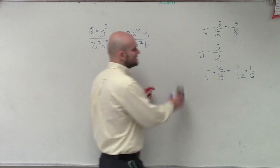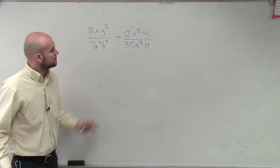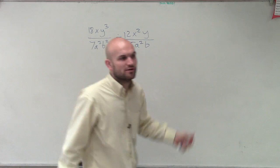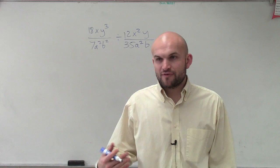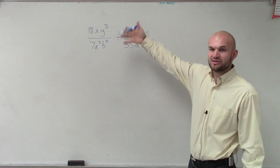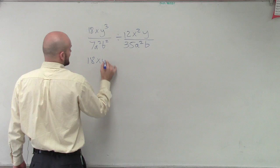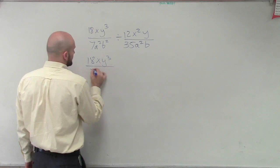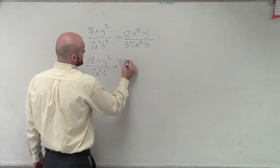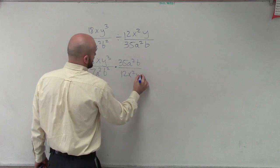So in this case, you guys can see I have a pretty odd fraction, right? It's not as easy as 1 fourth and 3 eighths. We have a fraction that's looking a little bit different. So what I'm going to have to do is take this, find the reciprocal of it, and then multiply across. So by doing that, I have 18xy cubed over 7a squared b squared times 35a squared b over 12x squared y.